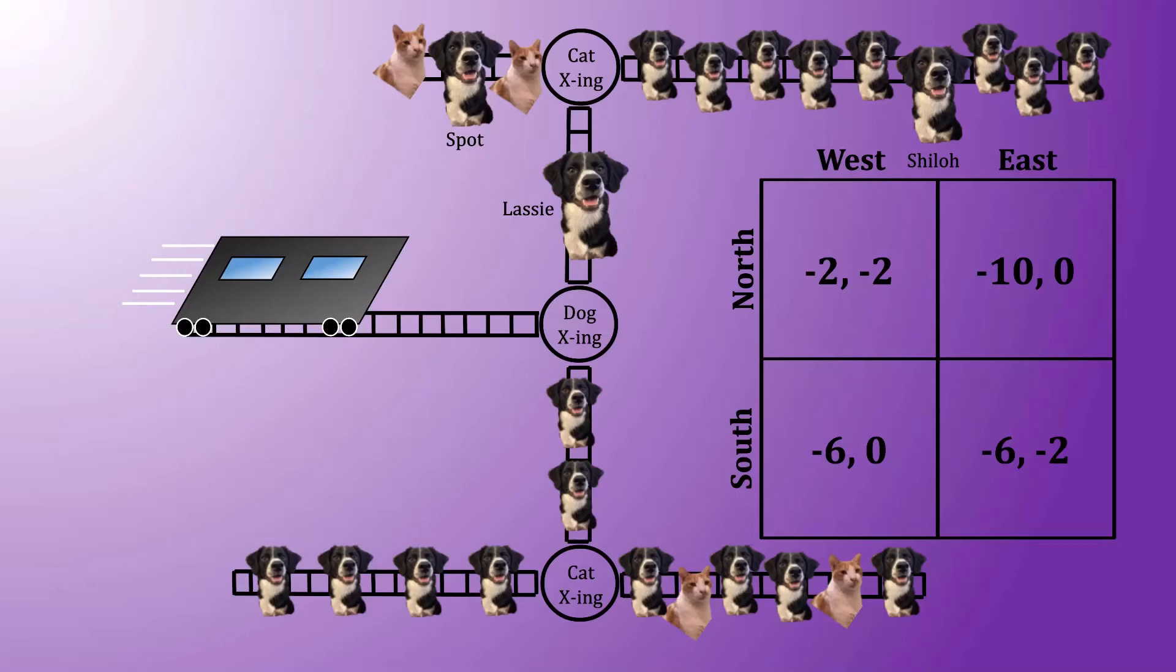But this means that we immediately know the expected number of dogs hit. If you look at the south strategy for the dog, regardless of what the cat ends up doing, six dogs are hit. As a consequence, when the cat and the dog play this game optimally, the dog is going to lose six in expectation.